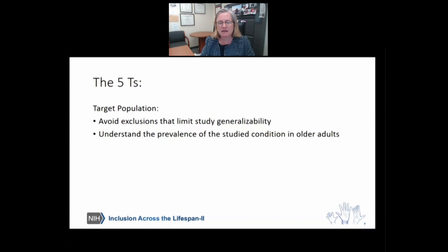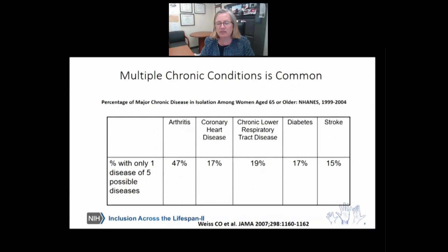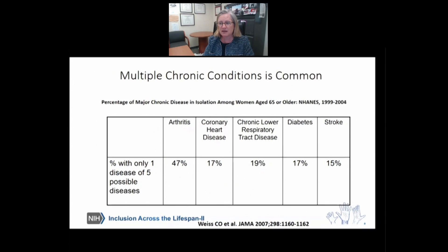For target population, the guidance given is to avoid exclusions that limit study generalizability and fundamentally to understand the prevalence of the study condition in older adults. As some examples of the kind of thinking that you might want to do in this step, I share work by Dr. Weiss and his colleagues, which showed that for these major chronic diseases, disease in isolation is actually the exception rather than the rule. For example, for coronary heart disease, less than 20% of older women who have coronary heart disease don't have any of the other four conditions listed. And obviously, if you looked at a larger number of conditions, the number of people who only had heart disease would even be smaller.